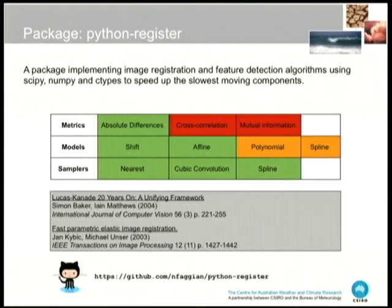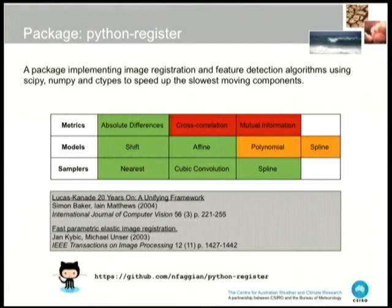Breaking down what's actually implemented right now: we have metrics including absolute differences. We've got a few models — a basic shifting model, an affine transformation model. We've got samplers: a nearest neighbour sampler, a cubic convolution sampler, and a spline sampler which pulls map coordinates from SciPy's ND image library. All the samplers except the spline sampler are implemented using ctypes.